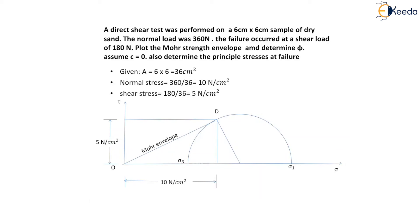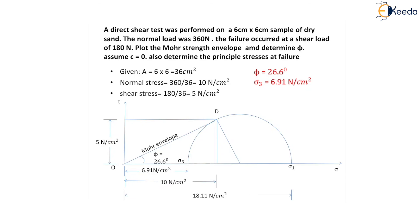The value of minor principal stress sigma 3 is 6.91 N per cm square, and the value of major principal stress sigma 1 is 18.11 N per cm square. The angle of inclination of the Mohr envelope with the sigma axis gives the value of the angle of internal friction phi, which equals 26.6 degrees. Hence the final values are: phi equals 26.6 degrees, sigma 3 equals 6.91 N per cm square, and sigma 1 equals 18.11 N per cm square.